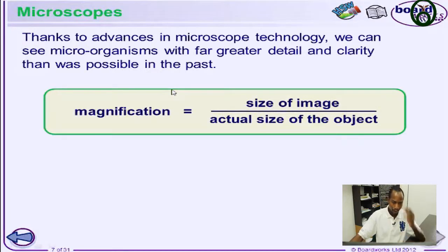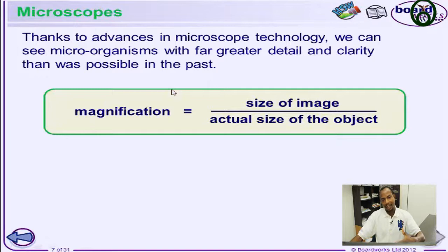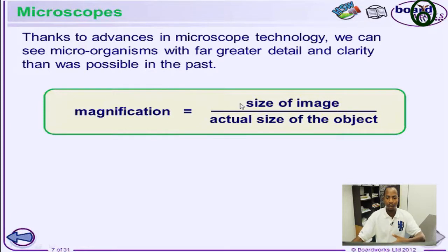When we talk about a microscope, we consider the image compared to the original object and how much it has been magnified. Magnification is defined as the size of the image over the actual size of the object. So if you want to see how an object has been magnified, you look at the ratio of the image to the actual size of the object.